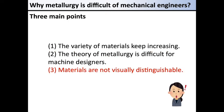Another reason why metallurgy is difficult is that the properties of materials are not visually distinguishable. Materials with different properties are often the same in appearance. In machine design, we are basically dealing with objects that we can see. Many people in the field of mechanical engineering may be confused by the fact that metallurgy is difficult to understand with respect to visual images.